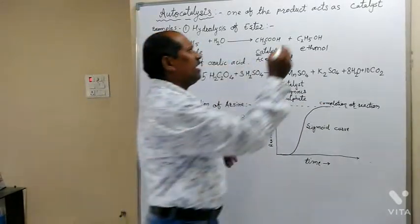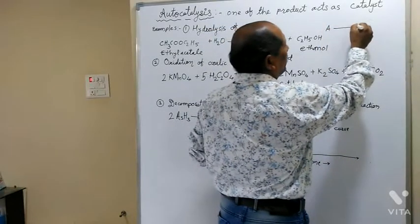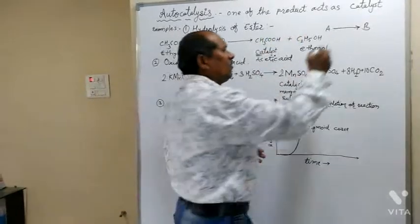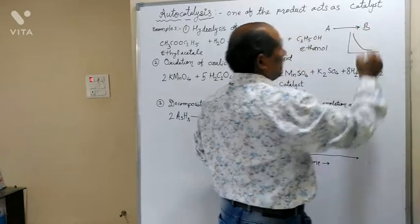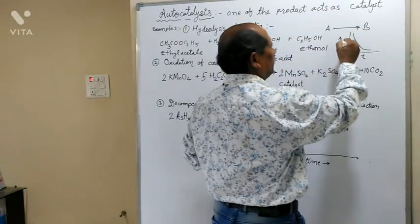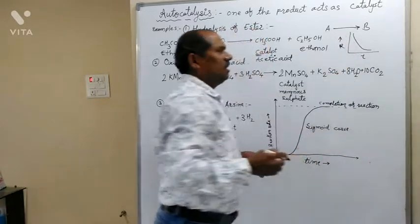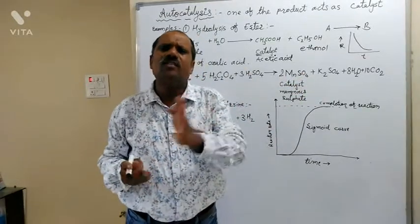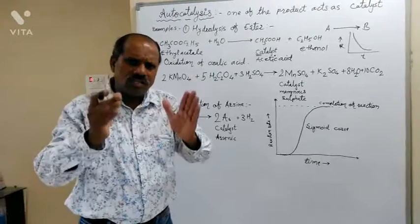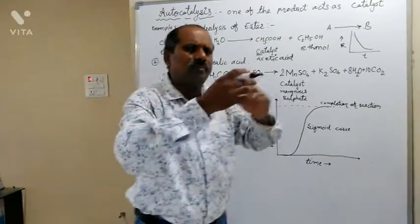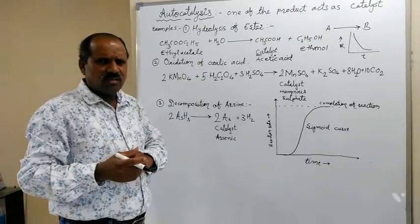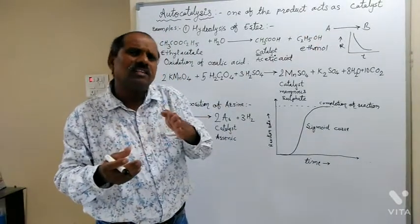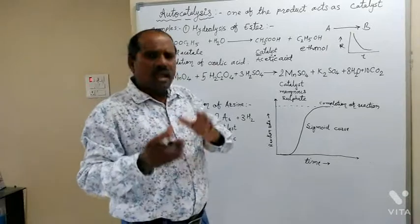Generally, whenever A is converting into B in any chemical reaction, the concentration of A goes on decreasing as time passes. The rate of reaction is directly proportional to the concentration of reactants. In the beginning, the concentration of reactants is more and hence the rate of reaction is also more. As time passes, the concentration of reactants goes on decreasing, and due to that decrease, the rate of reaction is also decreasing. This is what happens in general.